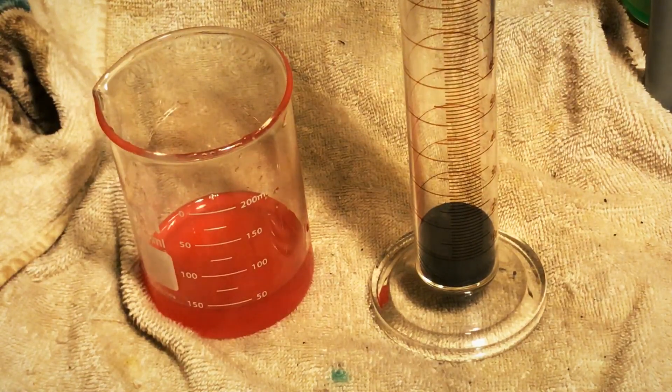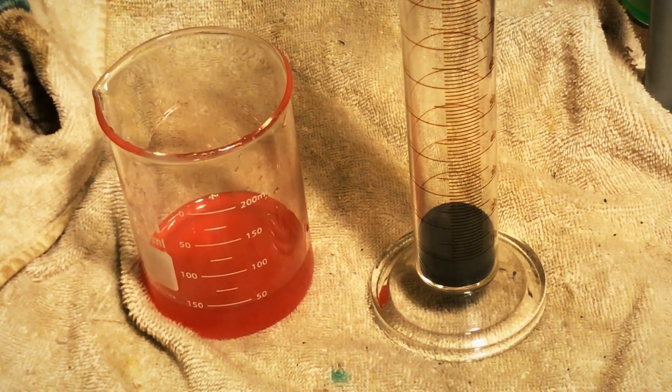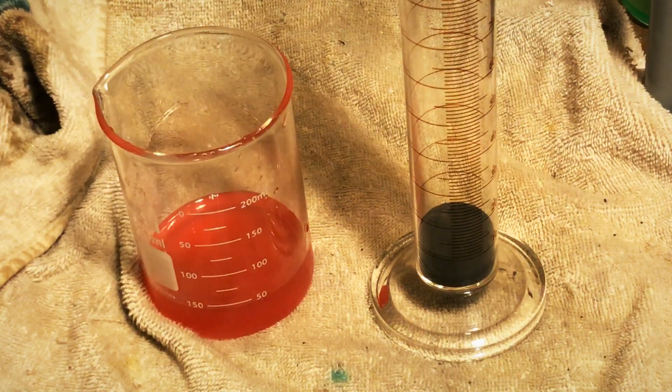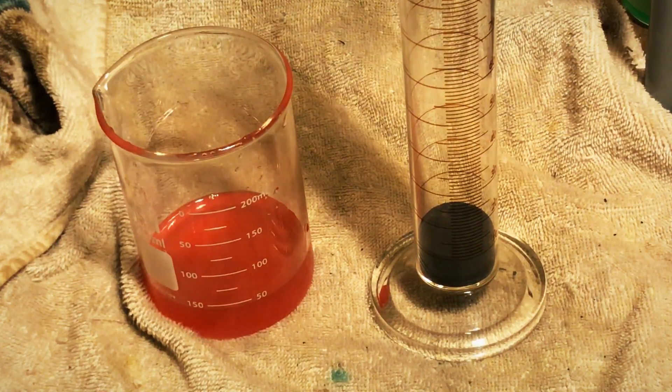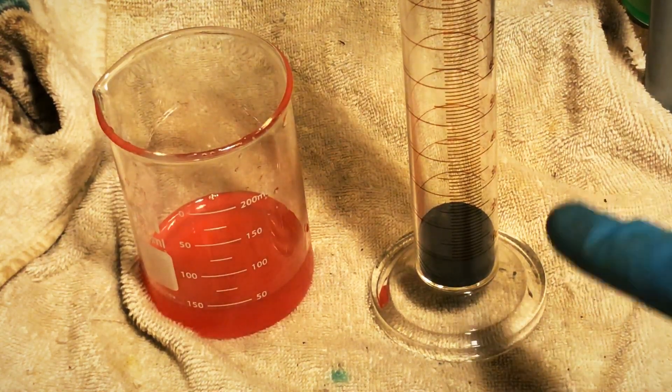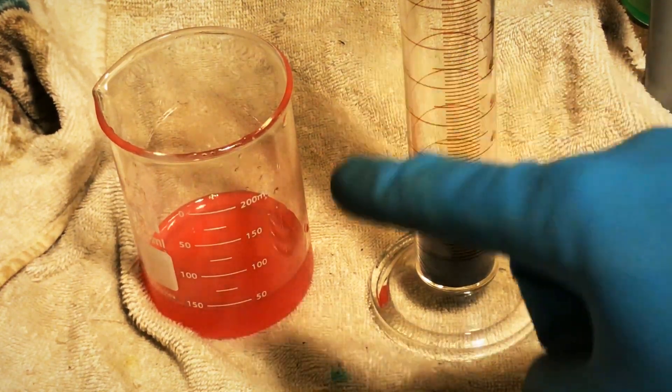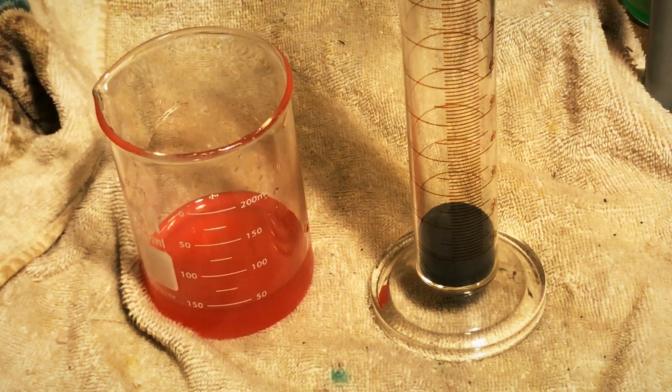I have 50 milliliters of concentrated sulfuric acid in this beaker. I'm now going to add 10 milliliters of solid potassium permanganate crystals to the concentrated sulfuric acid solution.